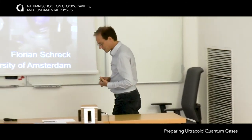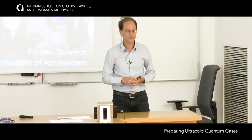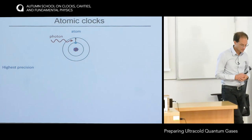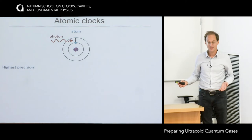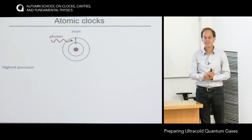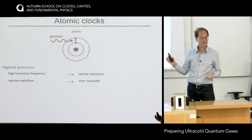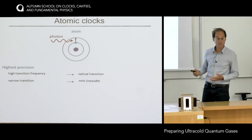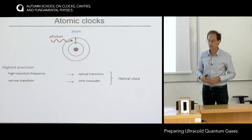Our goal is to build the best possible clock in the world. Clocks need a frequency reference — for us, of course, atomic transitions. To get the best precision, it's nice to use a transition with a high frequency and a narrow width. So an optical transition with a millihertz linewidth — we are going to build optical clocks.